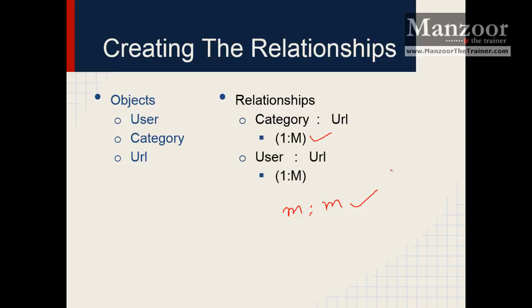There are three basic rules of designing a database. First rule is one table for each object. Second rule is for one-to-many. And third rule is for many-to-many. Designing a database out of objects and relationships is easy. The big deal is you need to identify objects and relationships among objects from the requirements.